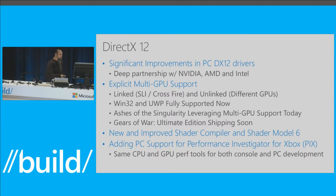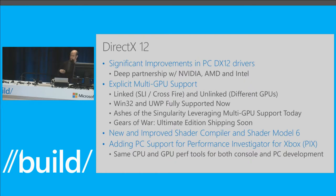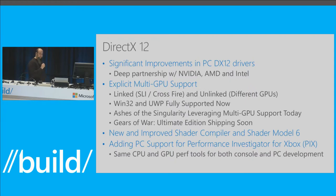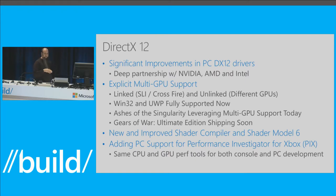Looking forward with DirectX 12, there's a new and improved Shader Compiler as well as Shader Model 6 that we're introducing. There was a deep dive at GDC 2016, available on Channel 9, for more details. We're also adding PC support for PIX — the Performance Investigator for Xbox — the tool all the best developers use to optimize rendering and game performance. We've gotten constant requests to add native PC support, and that will be coming later this year.